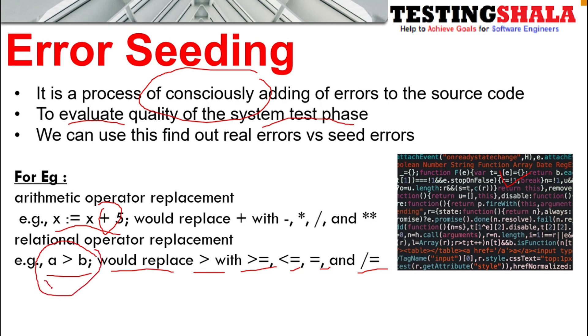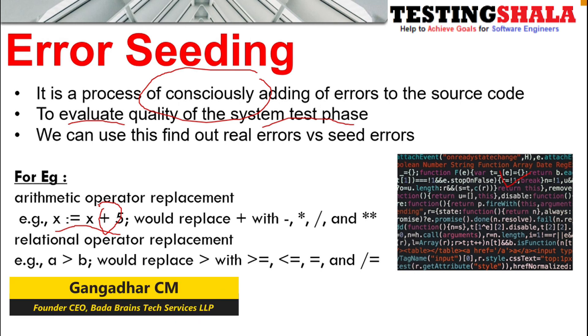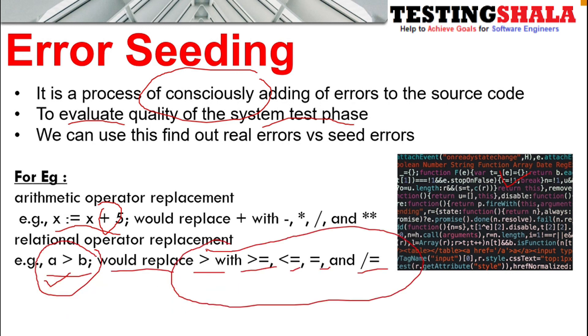Then normally our tester will focus only on test cases related to a greater than b. Because of that, error seeding becomes a very useful tool to identify system testing issues. Error seeding will help identify the quality of the test cases and the quality of the testing team we have. To assess all these things, error seeding mechanism will be used.